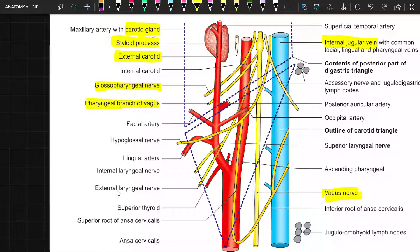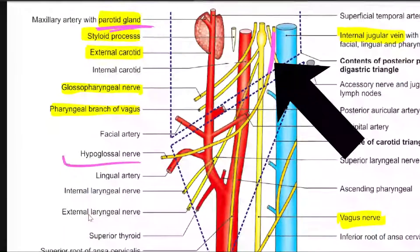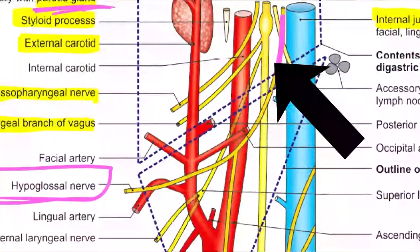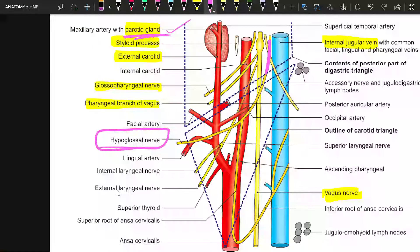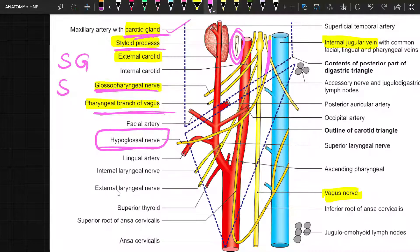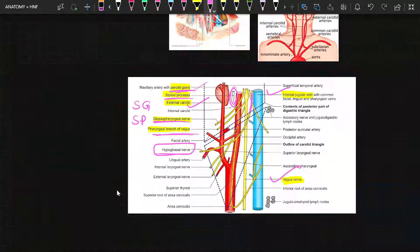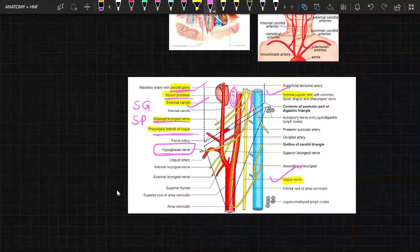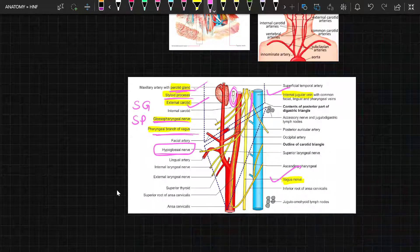To summarize, in the superficial contents we had two structures: the parotid gland and hypoglossal nerve. In the deep structures we studied the parotid gland, styloid process, pharyngeal branch of vagus, glossopharyngeal nerve, styloglossus, and stylopharyngeus muscles. In the deepest contents we have the internal jugular vein, vagus nerve, and external carotid artery. We have now finished the digastric triangle, covering boundaries, floor, roof, and contents — two superficially, six deep, and three deepest. Thank you.